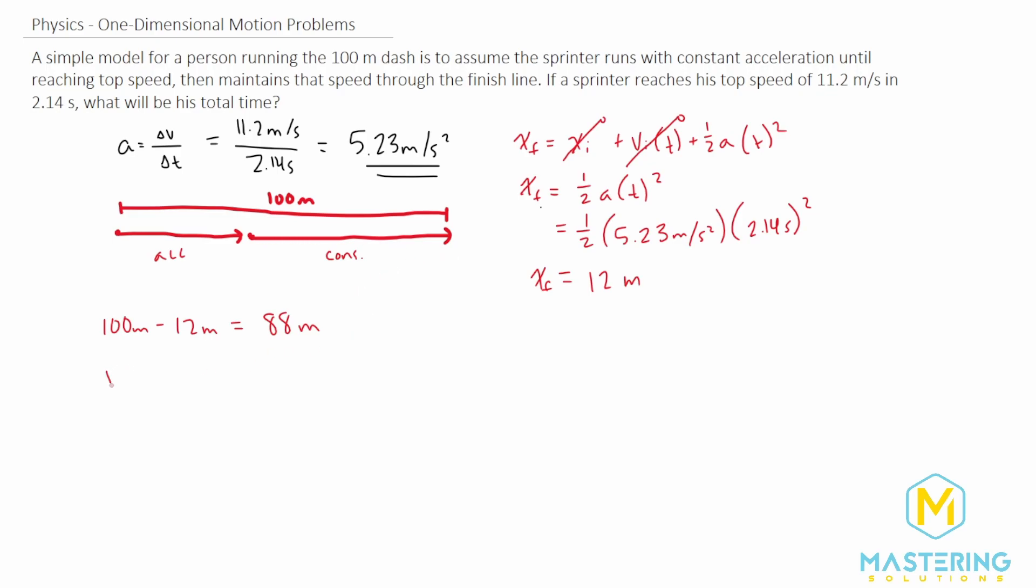Now we can use the velocity equation: velocity is the change in x over the change in time. We want to solve for time, so let's rearrange. Delta x equals v times delta t.